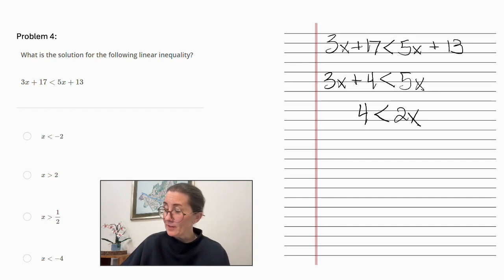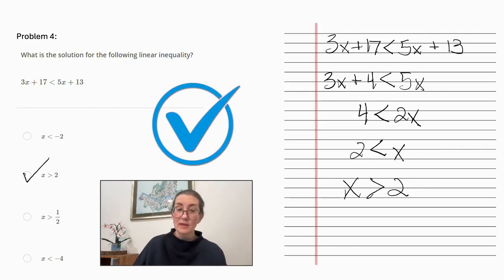And we're going to simplify this. So divide each side by 2 and we get 2 is less than x. 2 is less than x is equivalent to x is greater than 2. And so our answer is x is greater than 2.